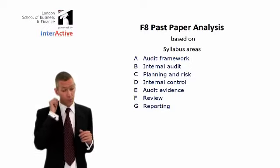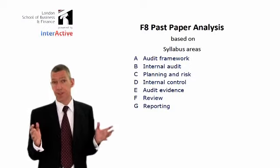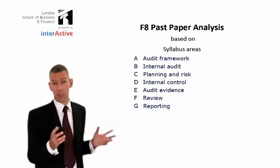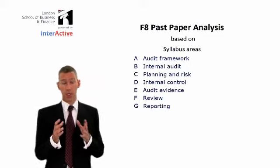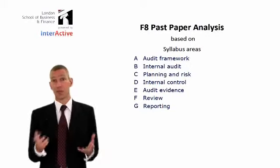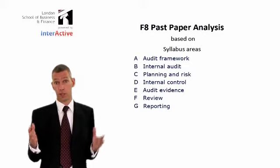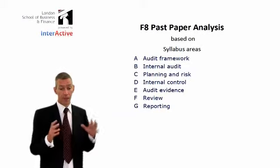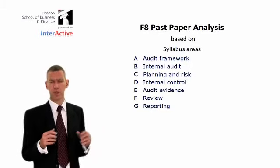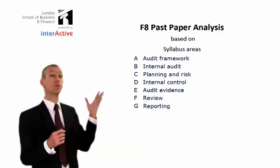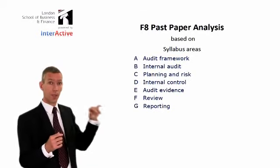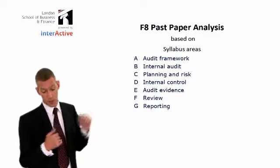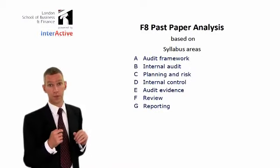Audit evidence is the biggie — that's the massive one. It contains substantive testing, which is the core of audit: the process of auditing financial statements to verify that they show a true and fair view. That really is the spine of audit and assurance. Then you've got areas F and G, which are quite closely related. You review financial statements in order to give an opinion, and giving the opinion is the process of reporting — so those two are very closely related.